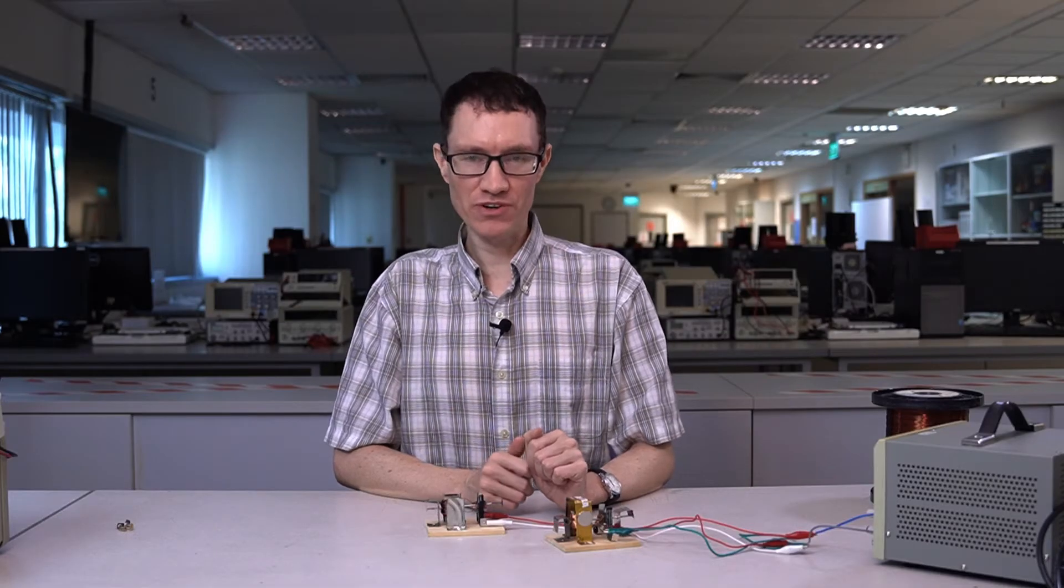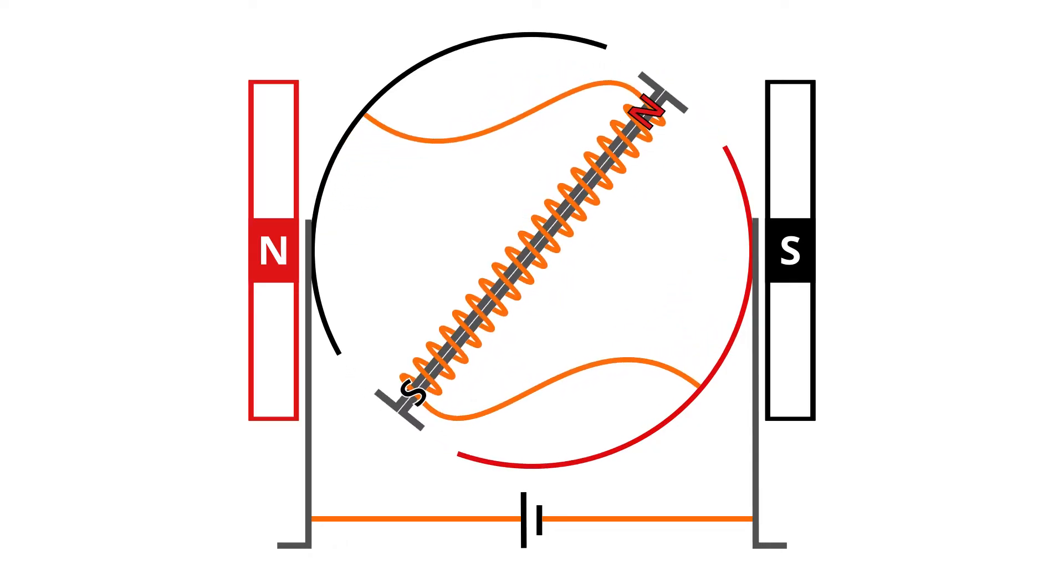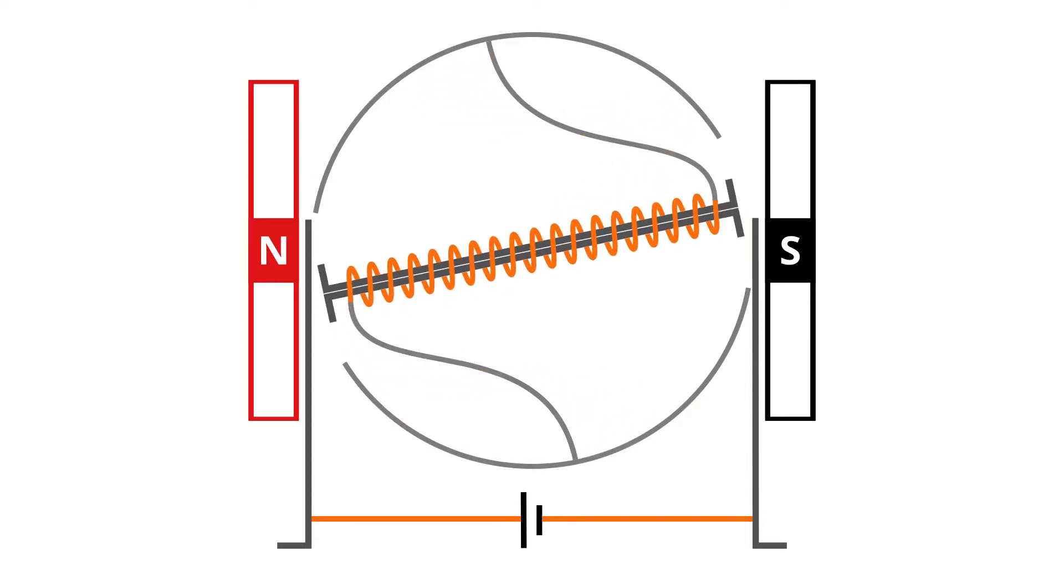The second problem with our 2-pole motor was that it wasn't self-starting. You had to give it a spin to get it going. The reason is that the brushes are not in continuous electrical contact with the commutator. When the brushes rub against the commutator, current flows, and the motor has torque.